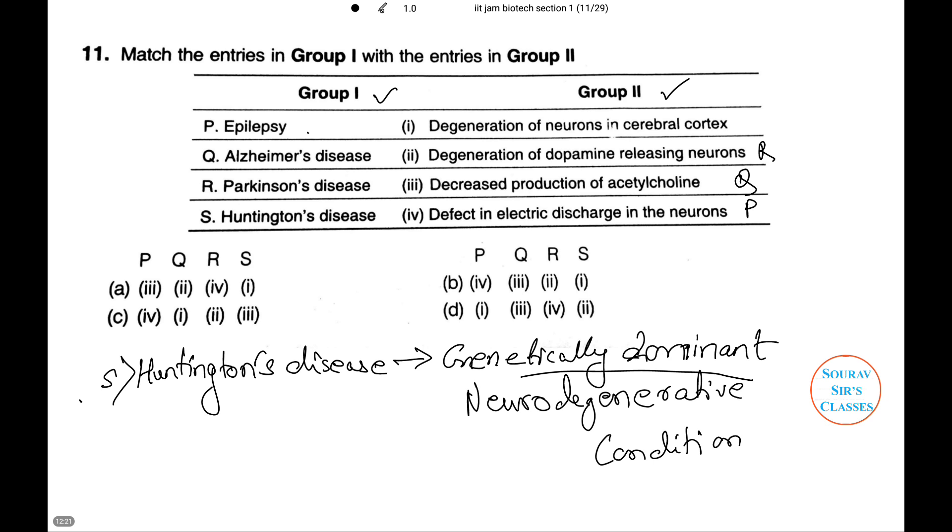And lastly, Huntington's disease. Huntington's disease is a genetically dominant neurodegenerative condition characterized by the progressive loss of motor and cognitive function that is caused by a degeneration of the selected neural populations within the basal ganglia and cerebral cortex. That is S. And on examination, we find that number B will be the option.